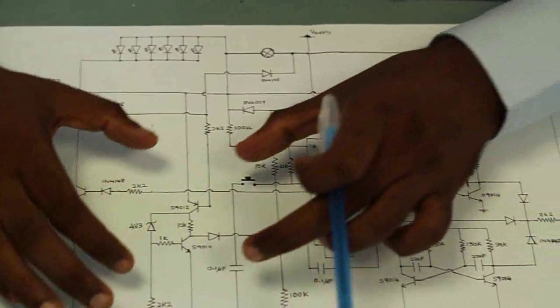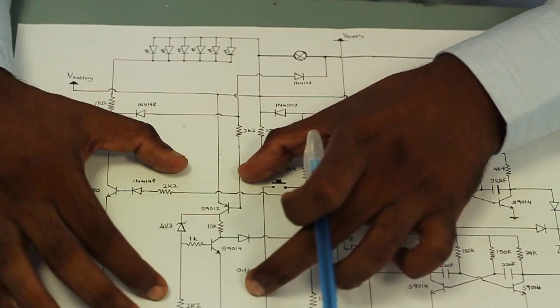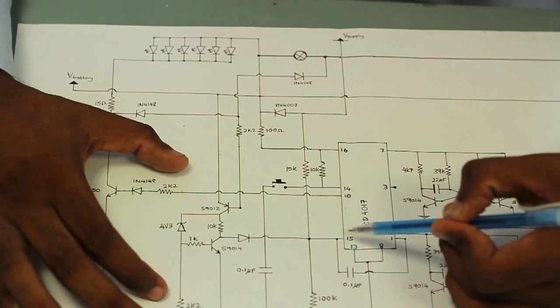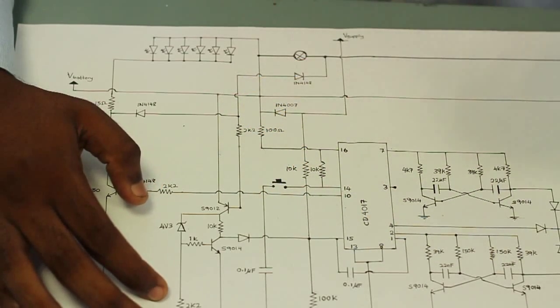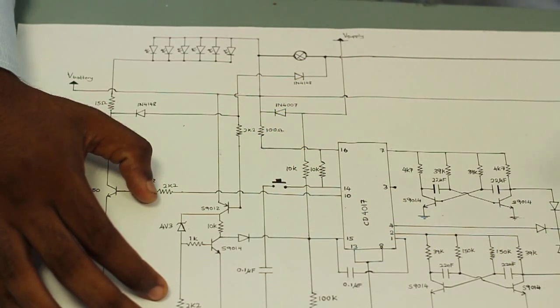Here you can see a voltage regulator circuit connected to pin number 15 and to the voltage supply. We will move on to the functionality of this.